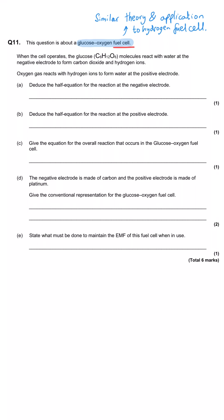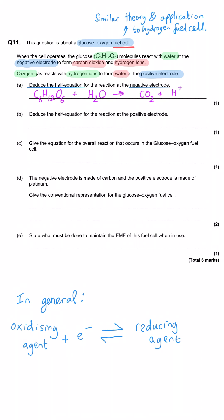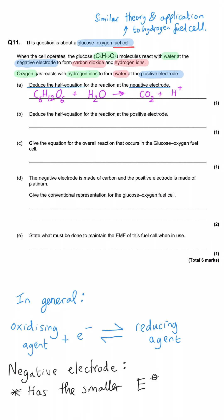The information we're given is that when the cell operates, the glucose molecules react with water at the negative electrode to form carbon dioxide and hydrogen ions. Oxygen reacts with hydrogen ions to form water at the positive electrode. For the half-equation at the negative electrode, the reactants are glucose and water, and the products are carbon dioxide and hydrogen ions. We need to put the electrons on one side — since this is the negative electrode, electrons are lost, so they go on the right-hand side.